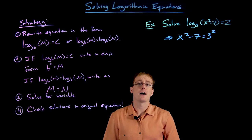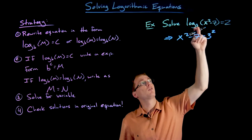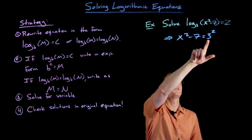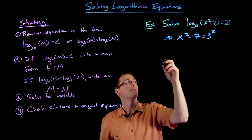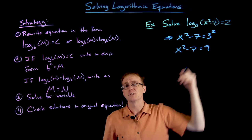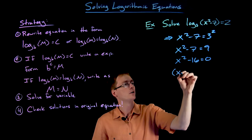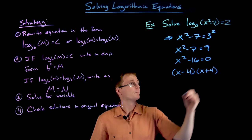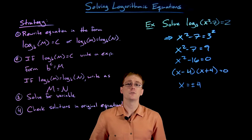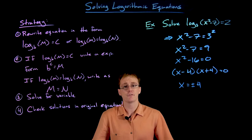The number two coming out of our logarithm is the power we raise the base to in order to get the number inside. So taking our base of three raised to that power of two gives us nine, meaning x squared minus seven equals nine. Subtracting nine from each side gives x squared minus 16 equals zero, which factors as x minus four times x plus four equals zero. From this quadratic we get two solutions: x could equal positive four, or x could equal negative four — but we're not quite done yet.